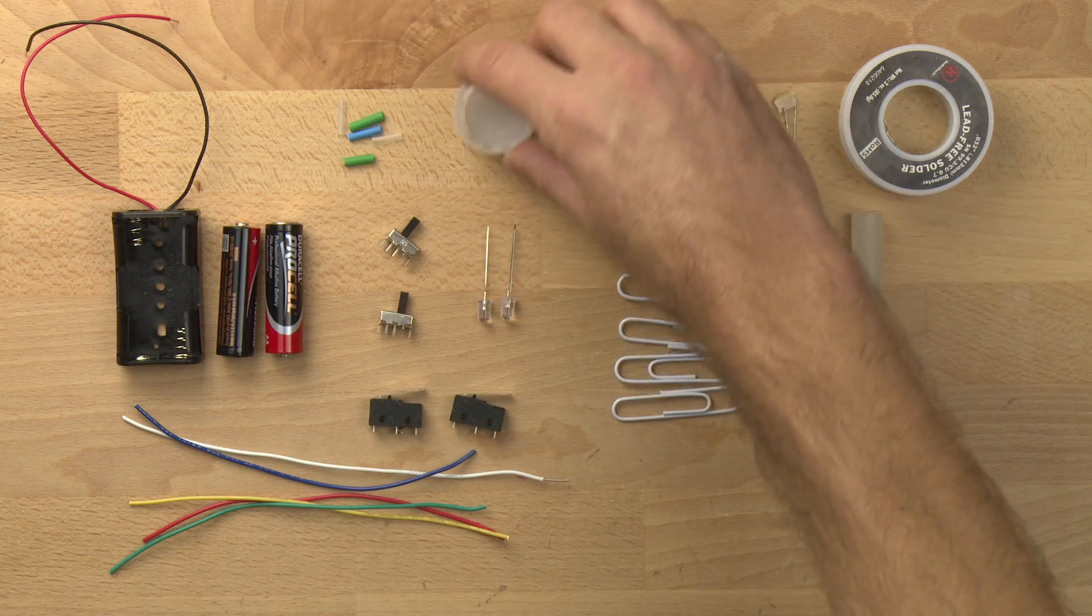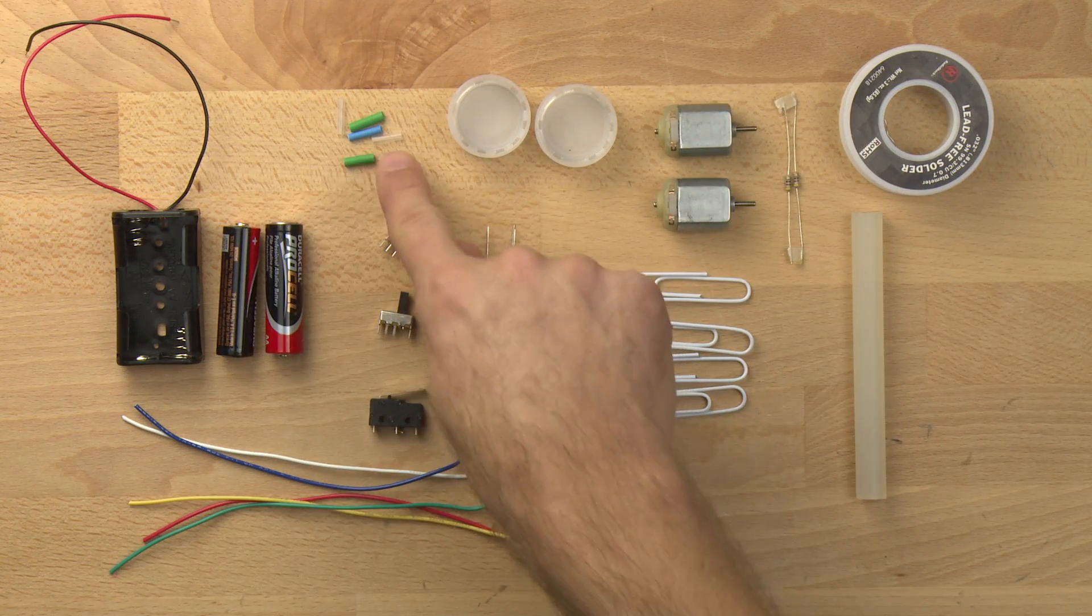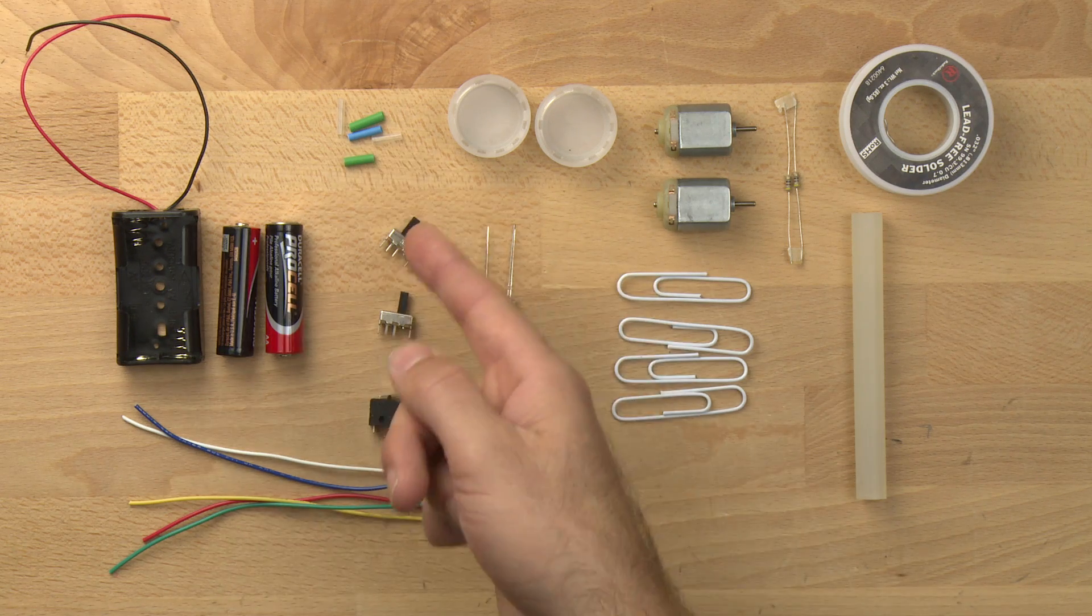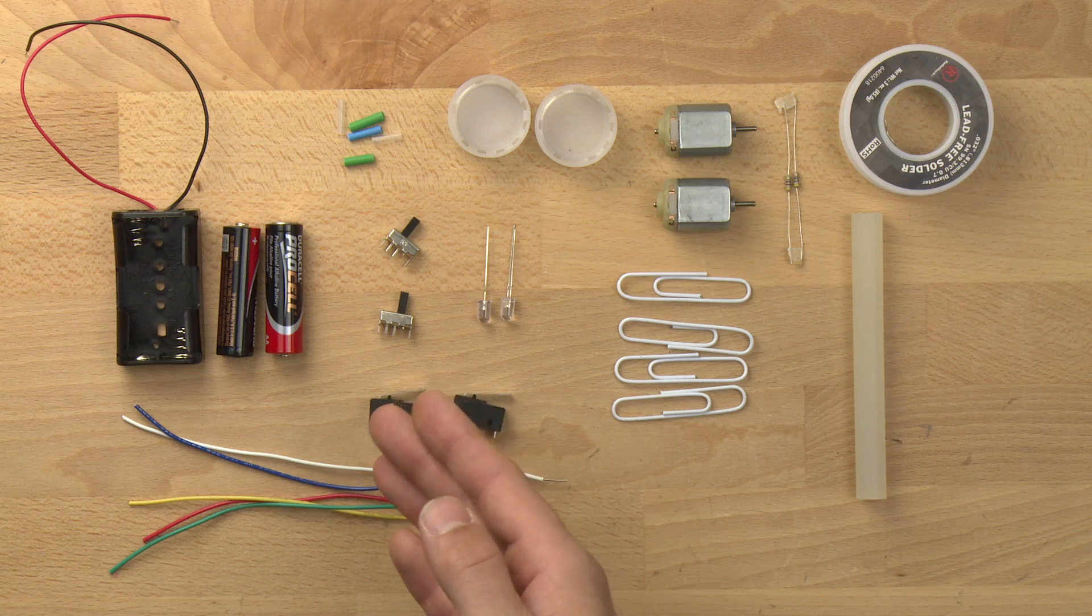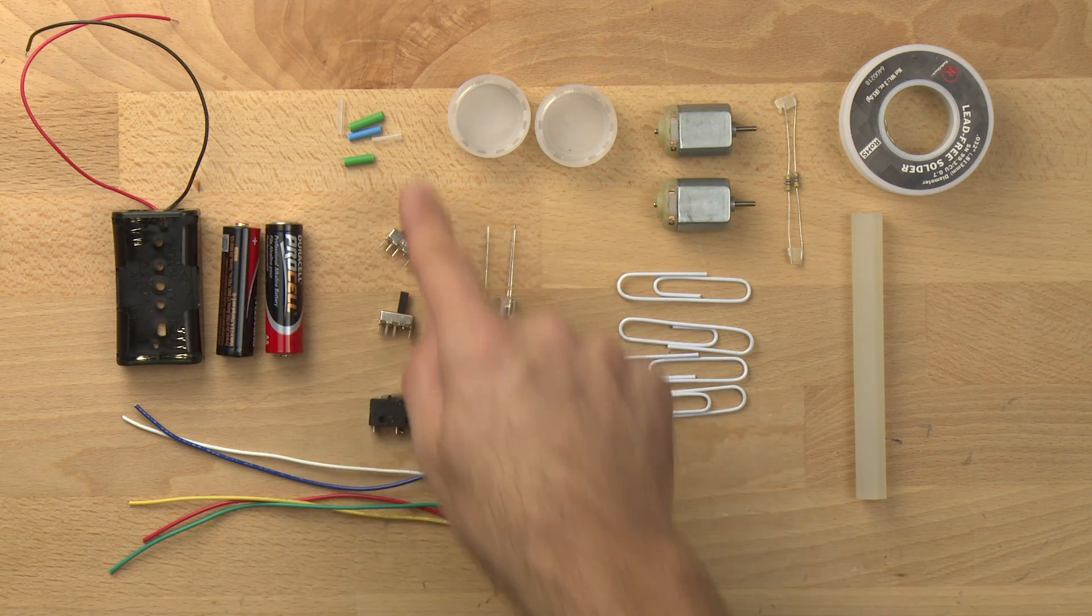Then we have two bottle caps from water bottles and some shrink wrap tubing. This comes in a lot of different sizes and colors. We've chosen 1/16th inch and I believe 1/8th inch tubing.